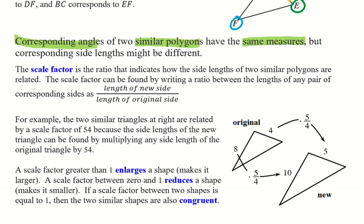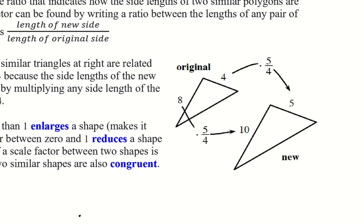So now we're going to define what the scale factor is. Reading right here, it says the scale factor is the ratio that indicates how the side lengths of two similar polygons are related. The scale factor can be found by writing a ratio between the lengths of any pair of corresponding sides as the length of the new side divided by the length of the original. So if we take a look at this diagram here that they have, they clearly have told us which is the original triangle and which one's the new. So we're taking this smaller one and we're scaling it up, right? So we're going from the original to the new, but the scale factor can be found by taking the length of a new side, one of the new ones and divided by the original side where we started. And this is fun on a snowy morning. It looks like the scale factor is S and O, right? Scale factor is the new divided by the original. So snow, except there's no W in there, but there's snow.